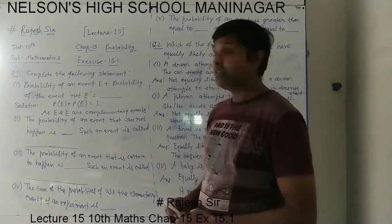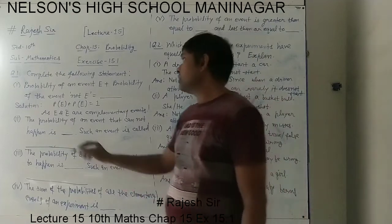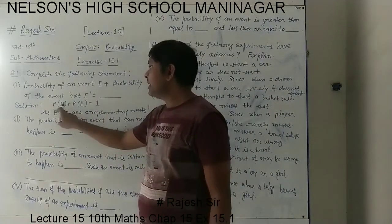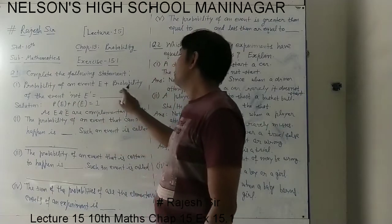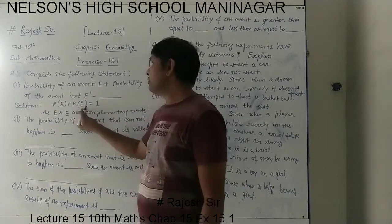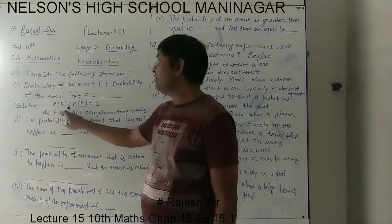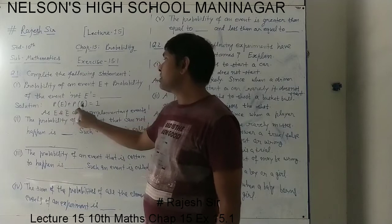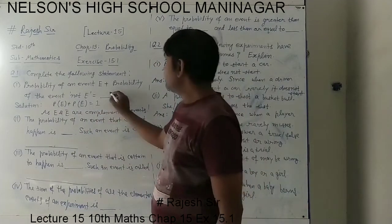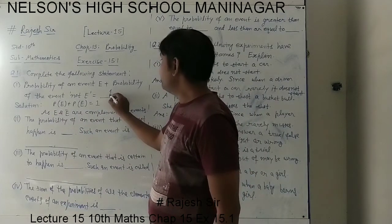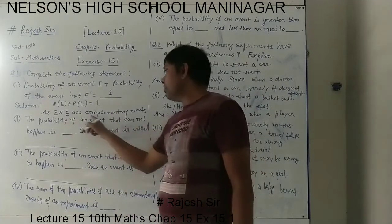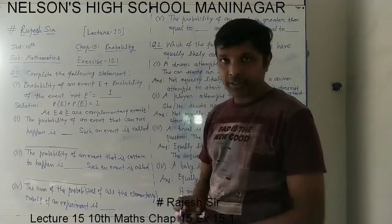So what will come here? In the solution, you know that probability of an event E is denoted as P(E), plus probability of the event not E is denoted by P(E bar). And in the theory we have seen P(E) + P(E bar) equals to 1. So the answer will be 1, as E and E bar are complementary events.